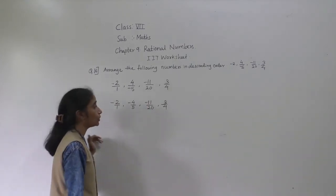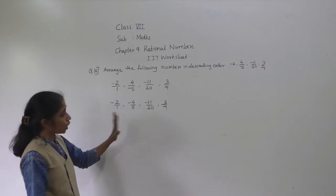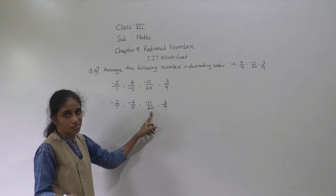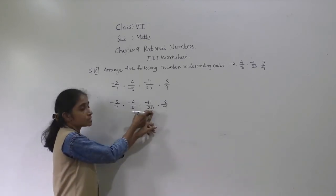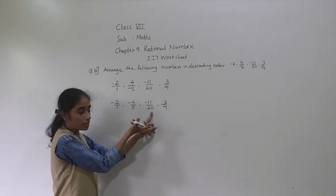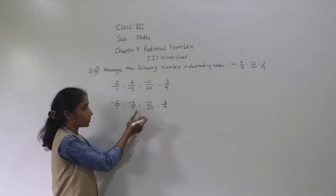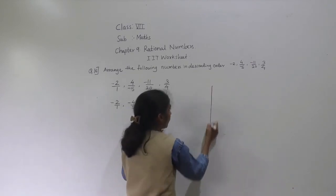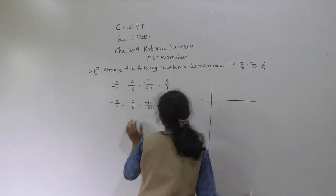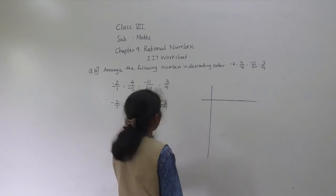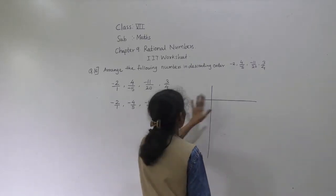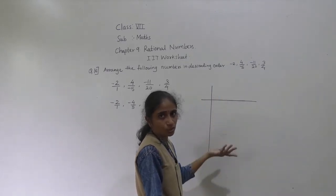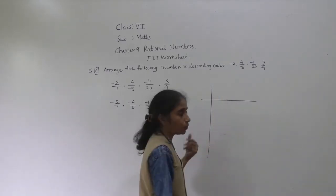All the denominators are different, so we need to find the LCM. The greatest denominator is 20. Checking: 20 is in the 4 table (4 fives are 20), in the 5 table (5 fours are 20), and divisible by 1 and 20 itself. So 20 will be the LCM. Let me show how to find it: LCM of 4, 5, 20 — divide by 2: get 5, 10, 2; divide by 2 again: 5, 5, 1; divide by 5: 1, 1, 1. LCM equals 2 × 2 × 5 = 20.